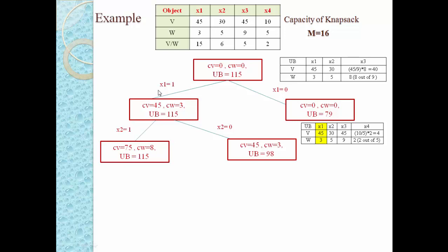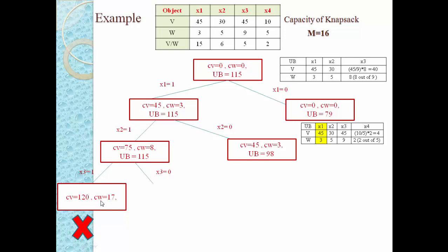Exploring the node where x1=1 and x2=1 (upper bound 115), we now consider object 3. If we select x3 (x3 = 1), current weight = 8 + 9 = 17, which is larger than the capacity of 16. So we cannot select this object and must go back. If we do not select x3 (x3 = 0), current value = 75 and current weight = 8, with upper bound = 85.